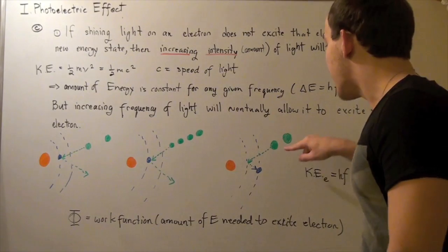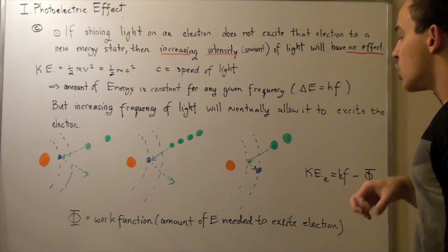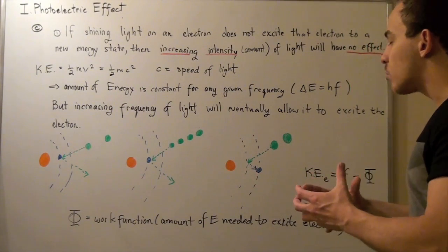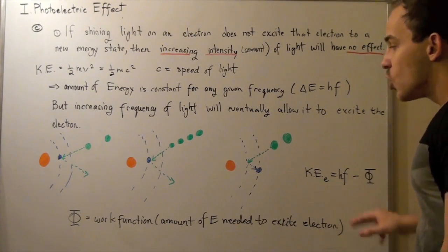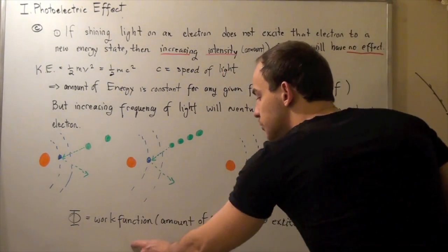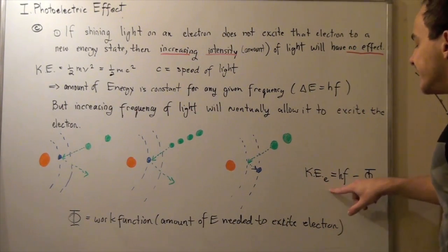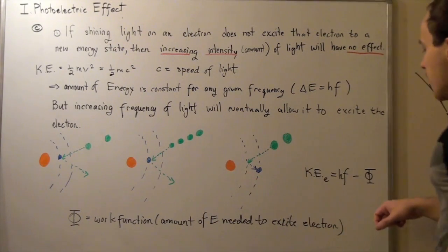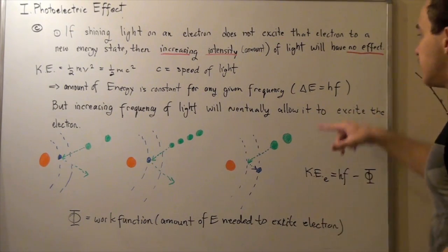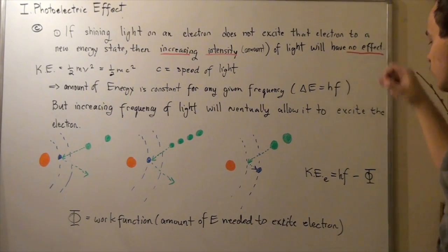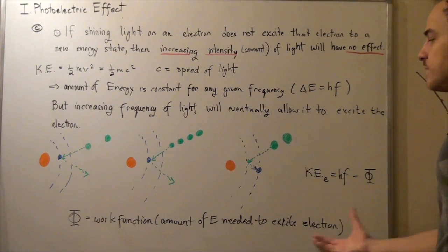Now suppose a photon has more energy than is required to excite the electron. The kinetic energy with which our electron leaves its orbital is given by the following formula, where the work function is the amount of energy needed to excite the electron. We get the kinetic energy of our electron by taking the quantized energy hf — Planck's constant times frequency — minus the work function. This gives us the kinetic energy of our electron.